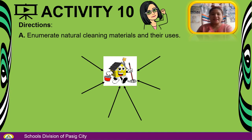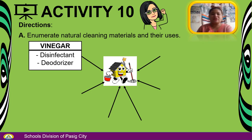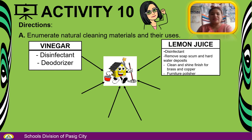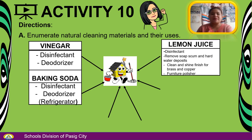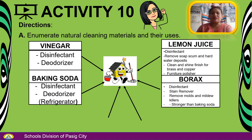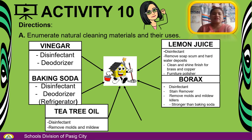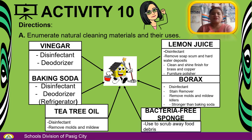For activity number 10, enumerate the natural cleaning materials and their uses. We have: vinegar — disinfectant, deodorizer; lemon juice — disinfectant, removes soap scum and hard water deposits, cleans and shines brass and copper, furniture polisher; baking soda — disinfectant, deodorizer for refrigerator; borax — disinfectant, stain remover, removes molds and mildew, stronger than baking soda; tea tree oil — disinfectant, removes molds and mildew; and bacteria-free sponge — used to scrub away food debris.